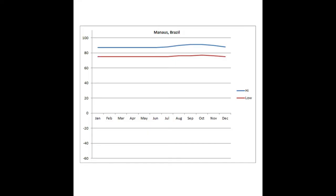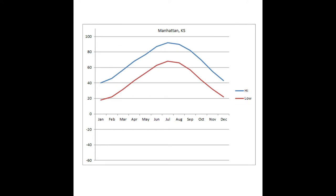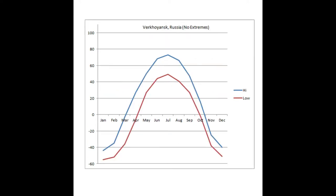Manus, Brazil has a temperature range annually of 3 degrees Fahrenheit. Aswan, Egypt, located at 23 degrees north, has an average annual range of 30 degrees Fahrenheit. Something more moderate would be Manhattan, Kansas at 39 degrees north, with a temperature range of 51 degrees Fahrenheit. Verkhoyansk, Russia, at 67.5 degrees north, has the highest range ever recorded, which is 183 degrees Fahrenheit for an annual temperature range.